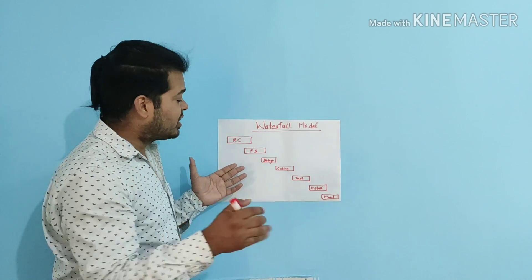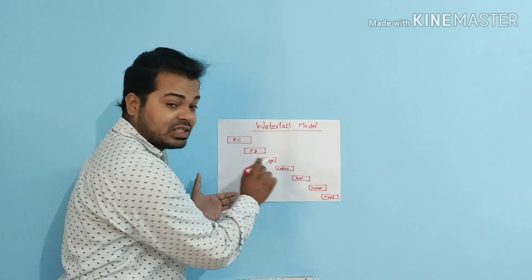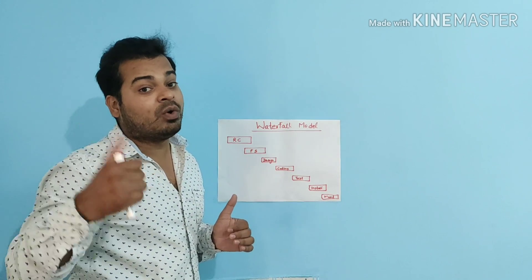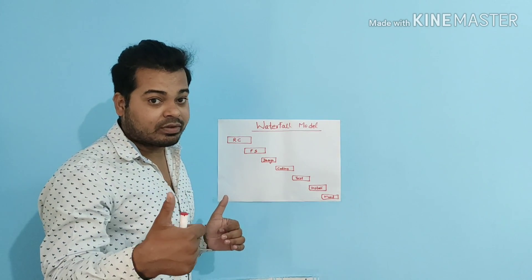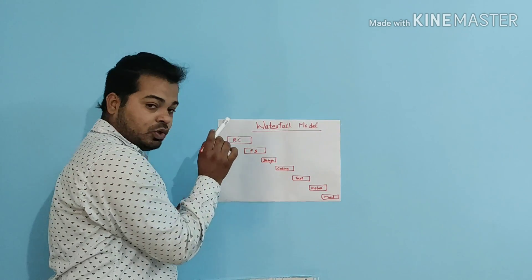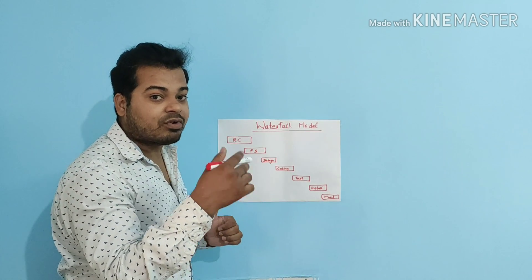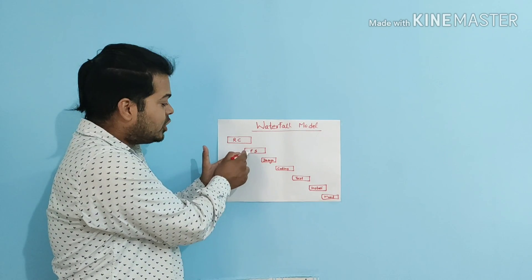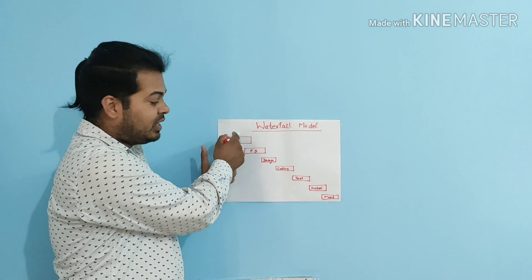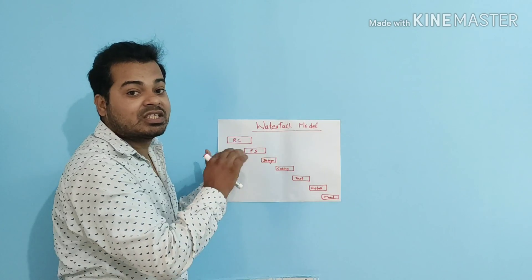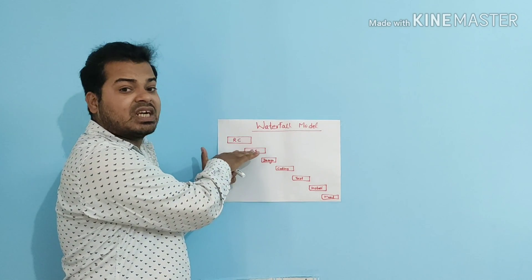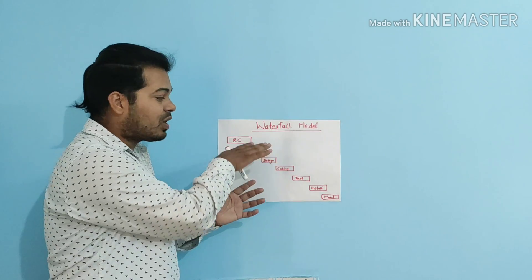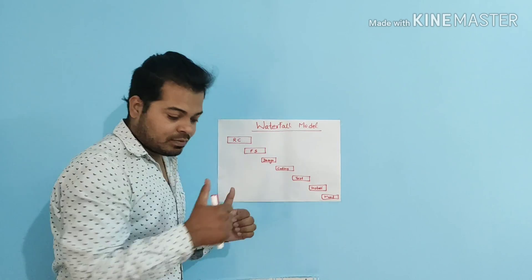If you are not understanding what these things mean, I request you to go back to my software development lifecycle video, watch it, then come to this video. In the waterfall model, once after the feasibility study is done, you cannot go back and change the requirement — requirement change is not allowed. This is how waterfall model is different from other models.